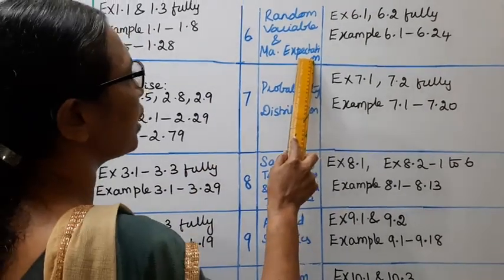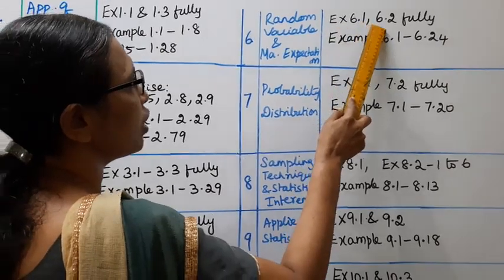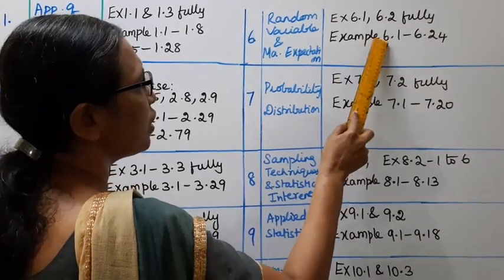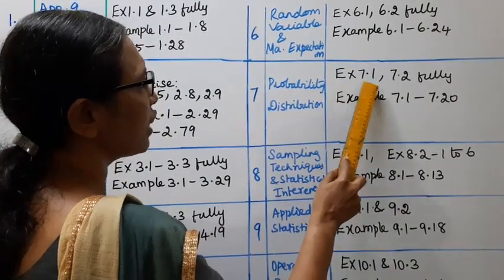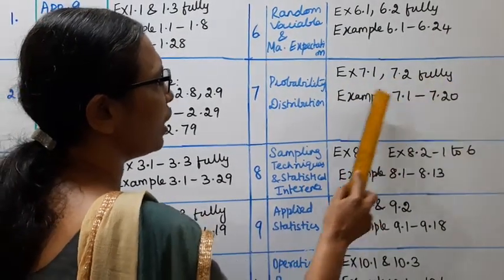Sixth chapter: Random Variable and Mathematical Expectation. Exercise 6.1 and 6.2 fully. Example 6.1 to 6.24.